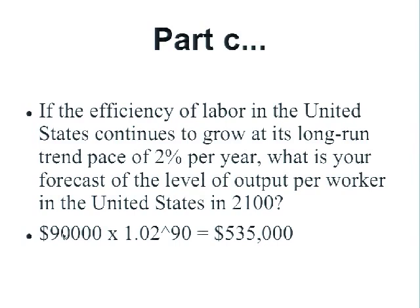Think back to what the life of your great and great-great-grandparents was like in 1900 compared to your life today — that seems to be the order of magnitude of difference we're looking at if we don't blow it and keep this machine of economic growth rolling. Last question: what will output per worker be in South Korea in 2100? Current level is $40,000 per worker per year, current rate of growth of efficiency of labor and GDP per worker at 5% per year.